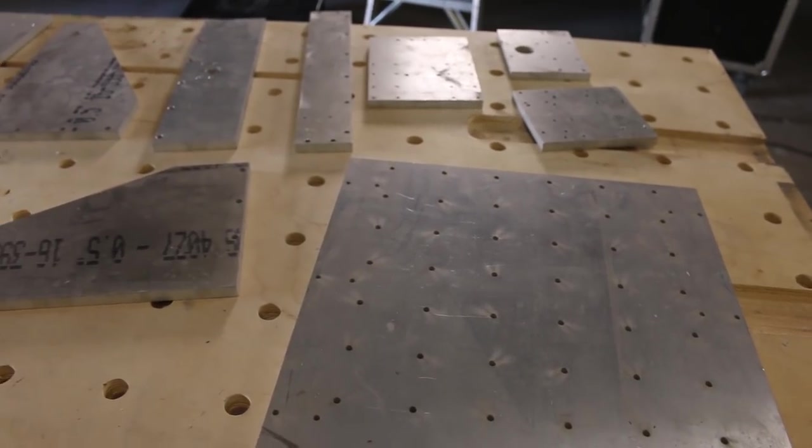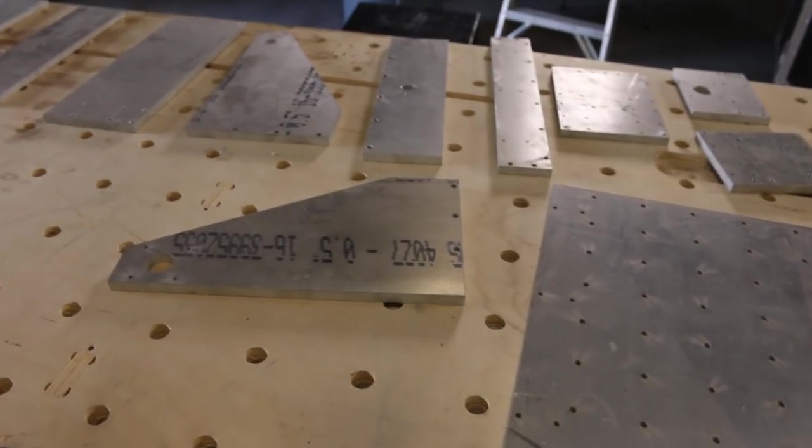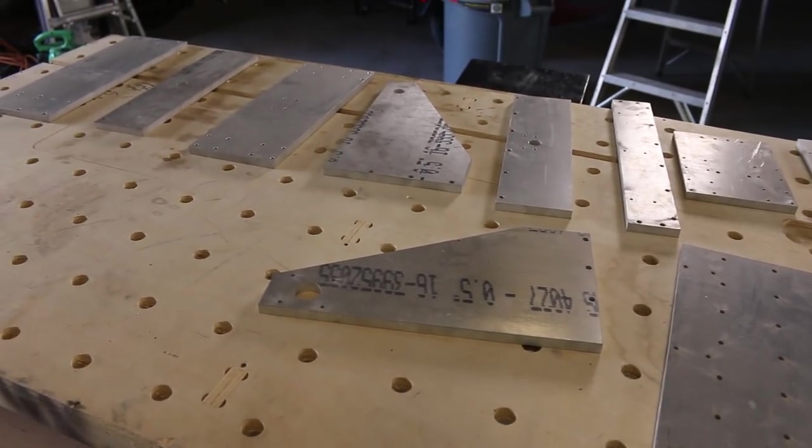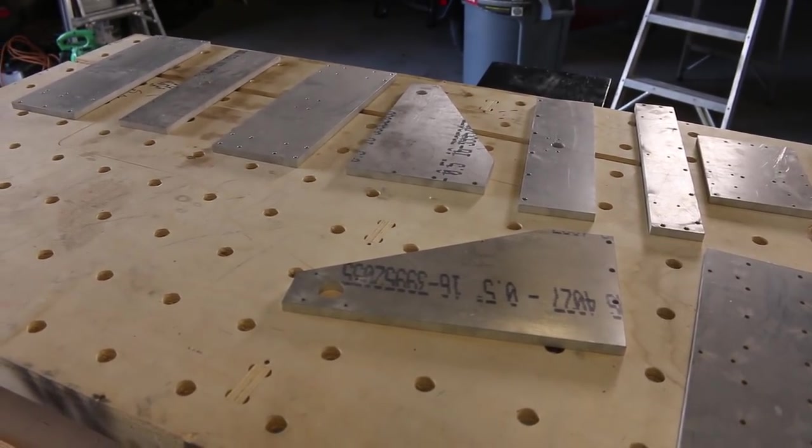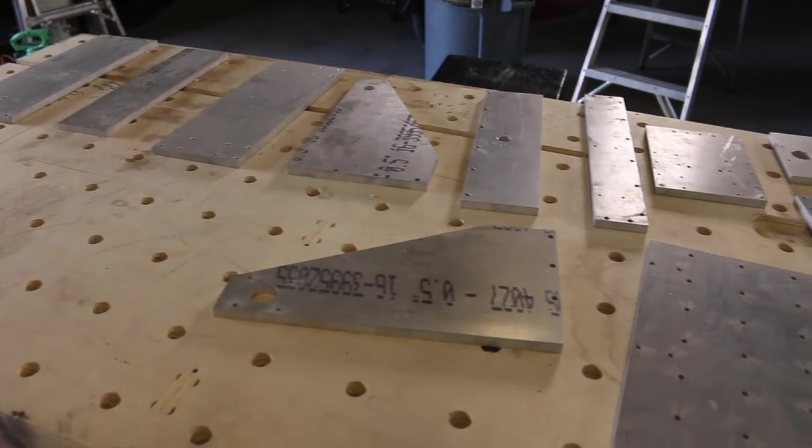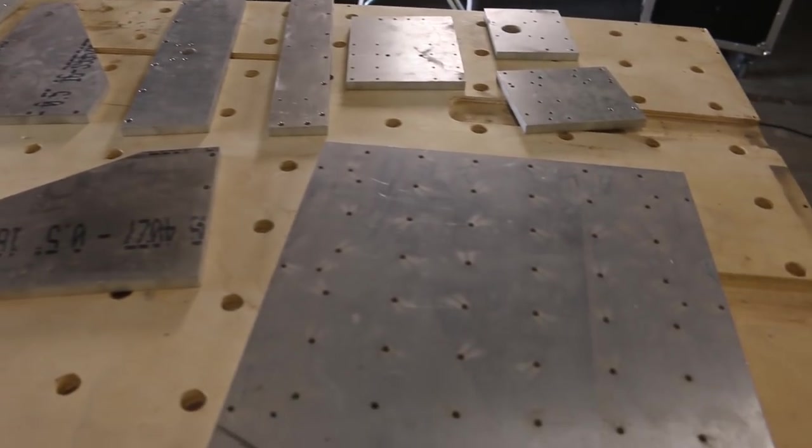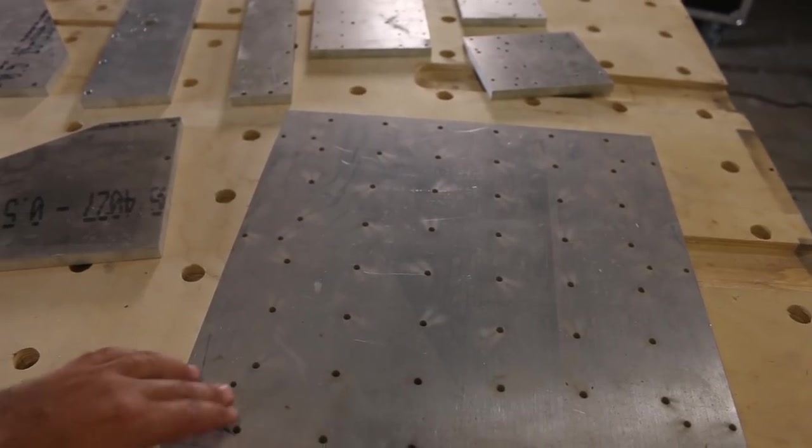So I paid to have these parts water jetted. I did some research and to buy the metal was going to be about $250 and I would cut it myself. To have it water jetted was $500 materials and cutting, so definitely think that was worth it.